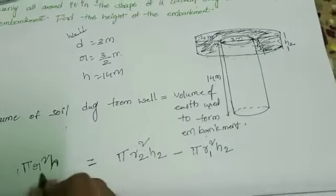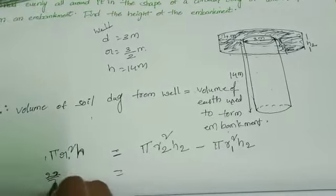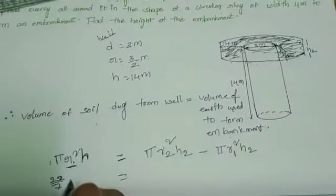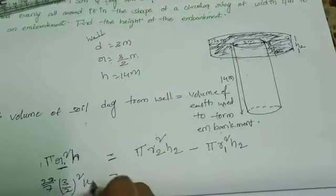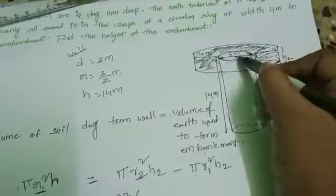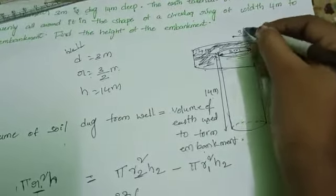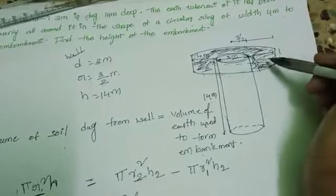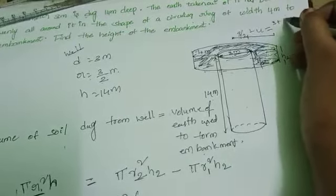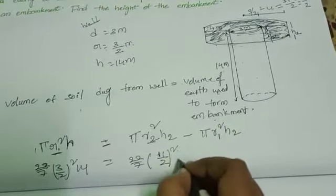R is the radius of the well. Pi value is 22 by 7. Radius of the well is 3 by 2 (since diameter is 3 meters), and H equals 14 meters. R2 is the radius of the embankment: well radius 3 by 2 plus width 4 equals 3 by 2 plus 4, which equals 11 by 2. H2 is unknown.